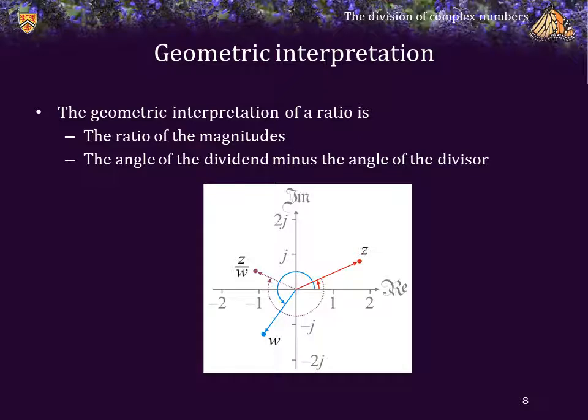Let's look at the geometric interpretation of a ratio of two complex numbers. The magnitude of the ratio is just the ratio of the magnitudes, and the angle is the angle of the dividend minus the angle of the divisor. Here we see z and w, and we are calculating z over w. In this case, z is approximately 1.8 in magnitude and w is approximately 1.5 in magnitude; 1.8 over 1.5 is closer to 1. We take the angle of z and subtract the angle of w, giving a result in the second quadrant.